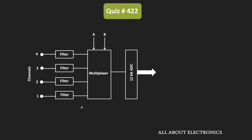If we have 4 channels, then a specific channel will get selected only at every 4th interval. Due to this multiplexing, we can acquire more data, but at the same time the sampling interval will also increase — meaning each channel gets time only after every 4th interval. So if the sampling frequency is Fs, then due to multiplexing 4 channels, the sampling frequency of each channel will be reduced to Fs divided by 4.